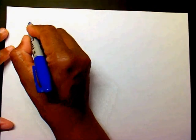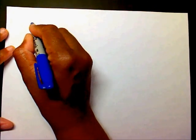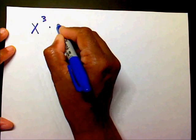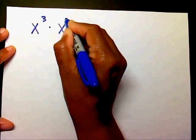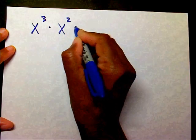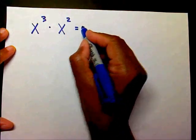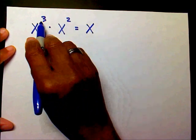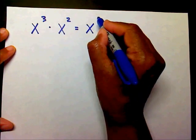There's a basic rule for multiplying like bases. The rule is: if you multiply exponents with the same base, you keep your same base and you add your exponents.